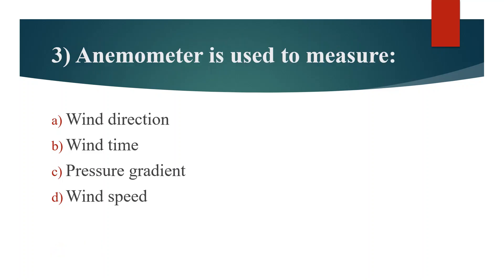Third question. Anemometer is used to measure. Option A: Wind Direction. Option B: Wind Time. Option C: Pressure Gradient. Option D: Wind Speed. Answer is Option D: Wind Speed.